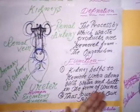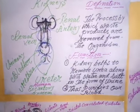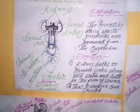Now I am discussing how the kidney produces urine. The structural and functional unit of the kidney is known as the nephron. Millions of nephrons are present in each kidney.